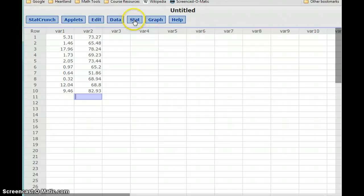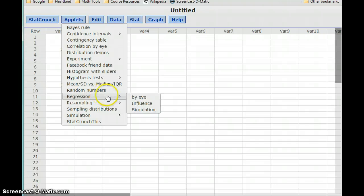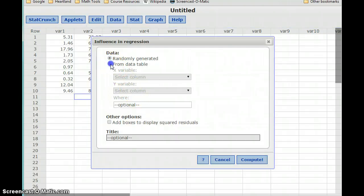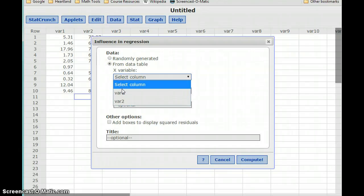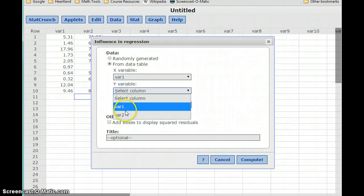So, rather than using the regression tool under the stat menu, we're going to select applets, regression, and then influence. So what this is going to be is just an interactive version of that regression output.